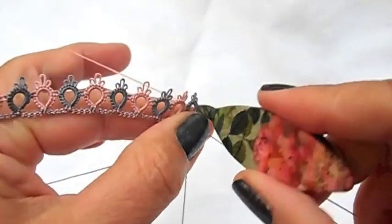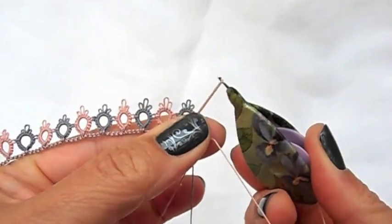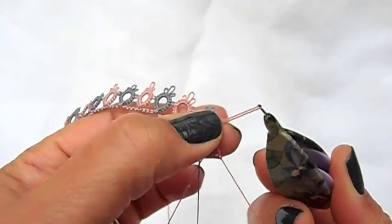Pull the loop through as normal, but don't pass your shuttle through it. Just hang on to it in the pinch.